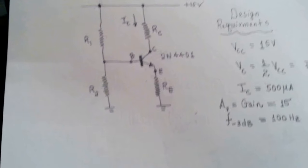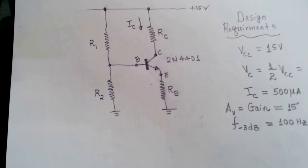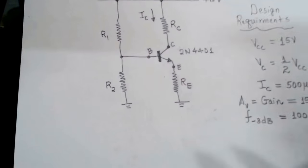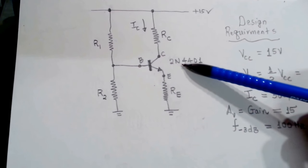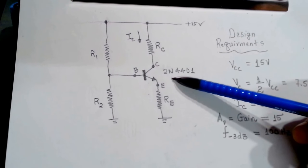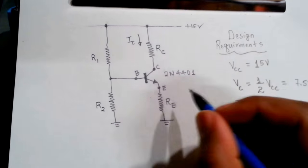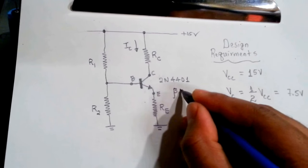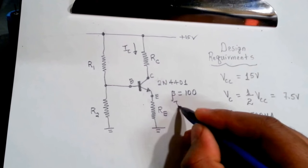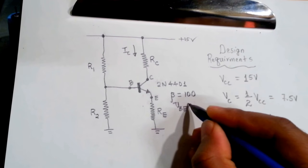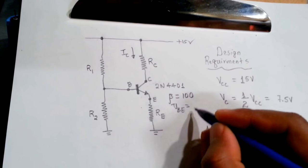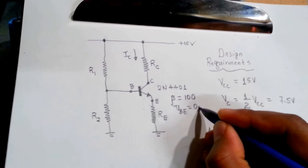The circuit is a standard common emitter amplifier. For this task, I have selected a transistor from my junk bin — the 2N4401. The minimum beta of this transistor is 100. The VBE of this transistor, from the datasheet curve, is around 0.65, so I'm going to approximate it as 0.7.